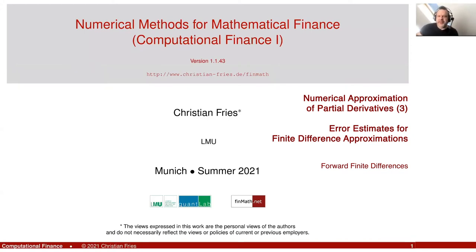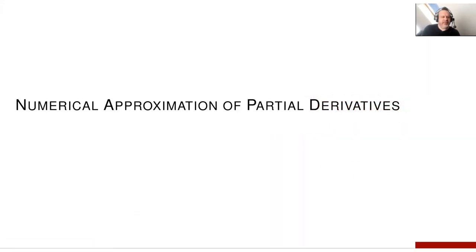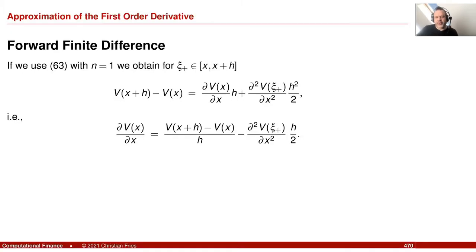We come back to numerical methods and we started in the last two sessions a new section on the numerical approximation of partial derivatives. We are here — we like to approximate a partial derivative, and that's maybe quite trivial stuff because we can just use Taylor expansion to derive formulas that are maybe already well known to you: the finite difference approximation. So we can approximate dv/dx by just the finite difference v(x+h) minus v(x), divided by h.